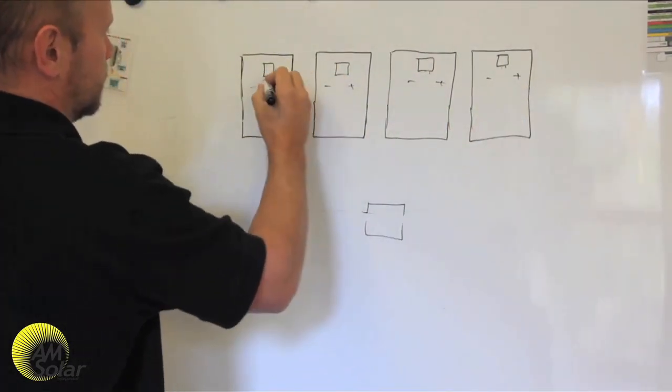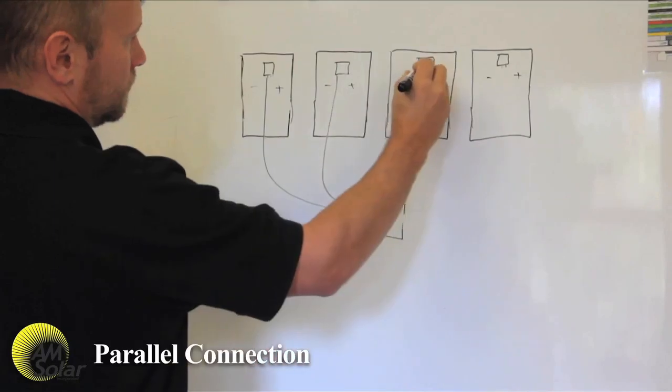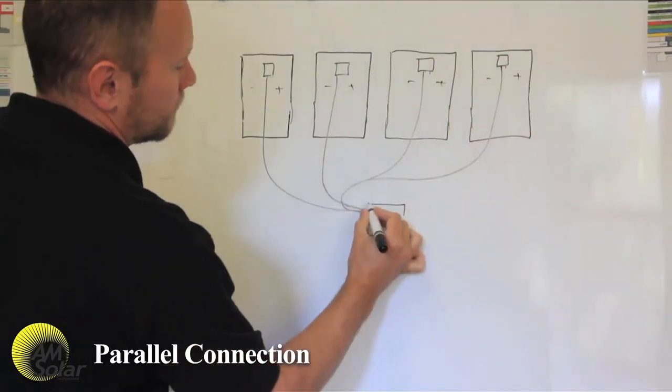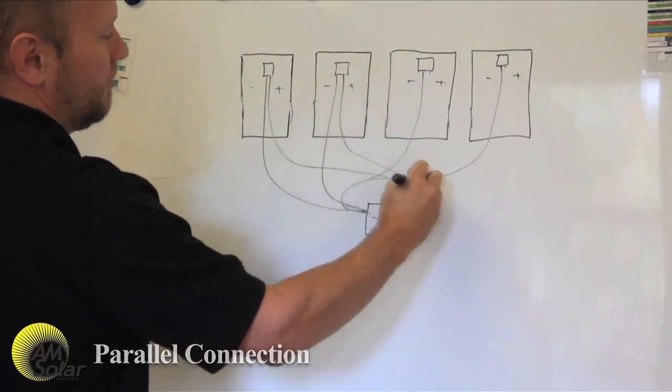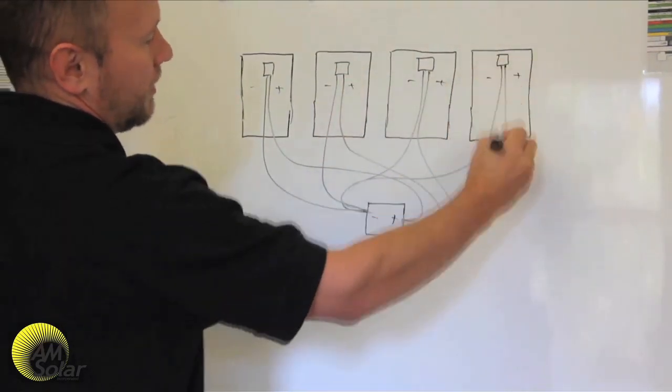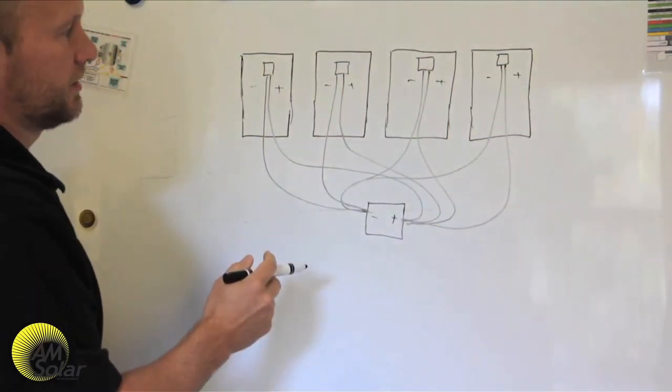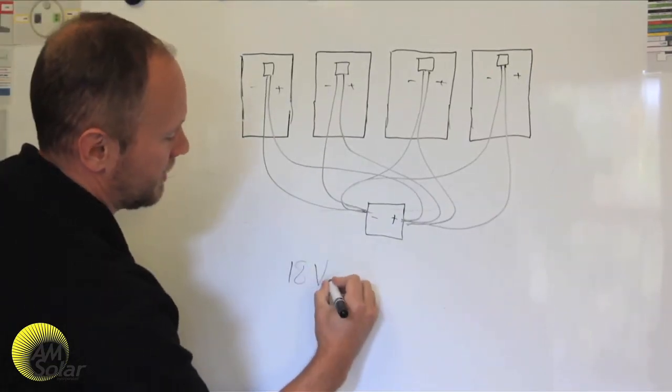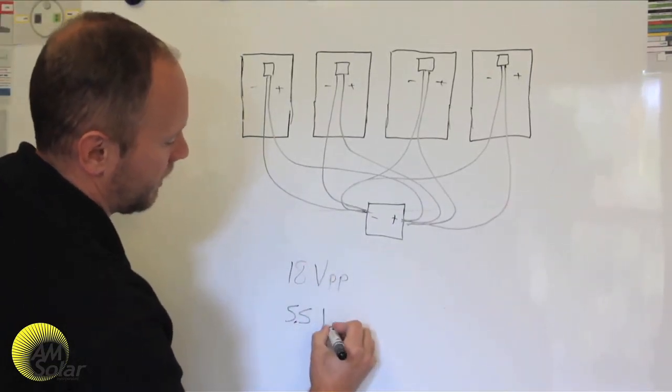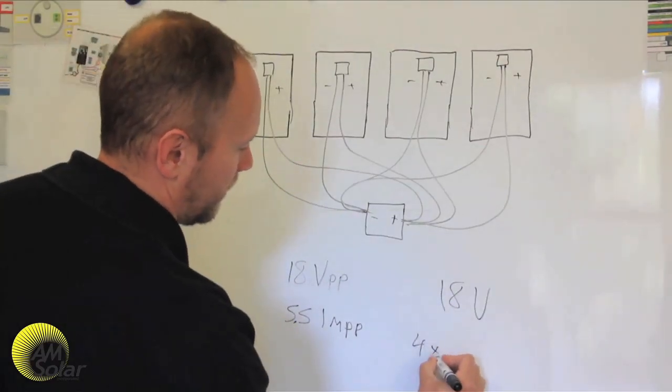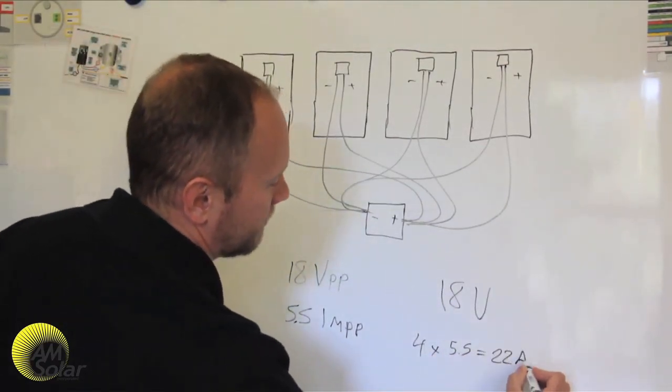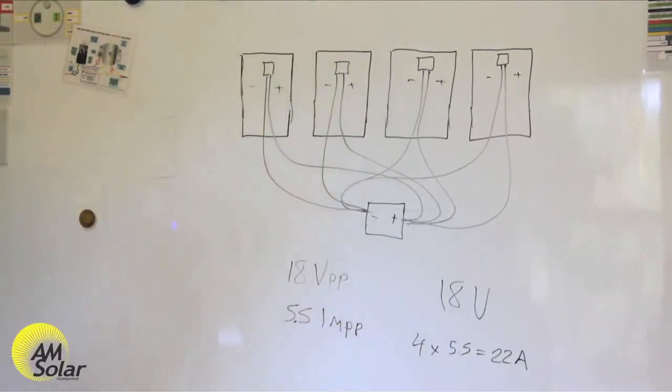A parallel connection is where you have the positive leads from all the panels grouped together on one bus and all the negatives grouped on the other bus bar. In this orientation, the charge controller sees a voltage that is the same as that of a single panel but the current's sum. If you had four 100 watt panels, each with a VMPP of 18 volts and an IMPP of 5.5 amps, your charge controller would see 22 amps at 18 volts.